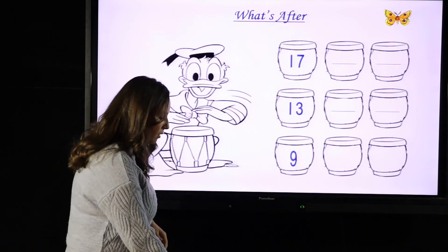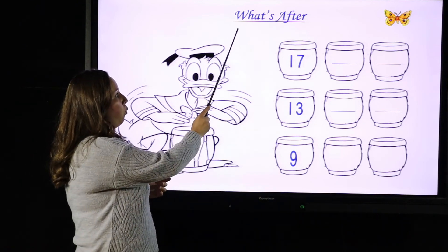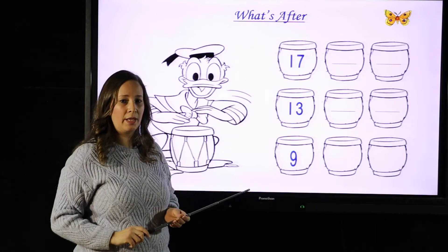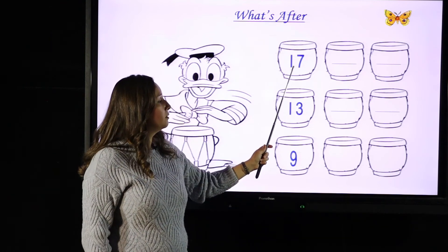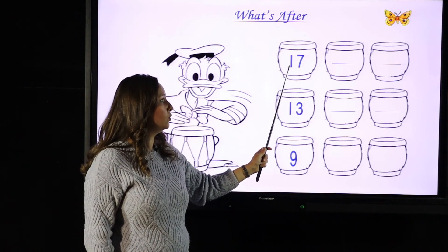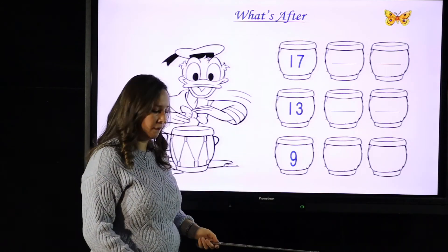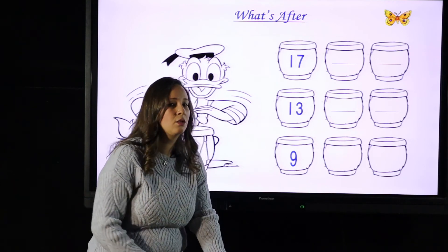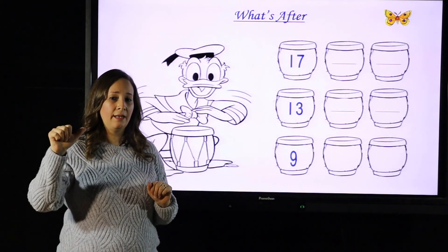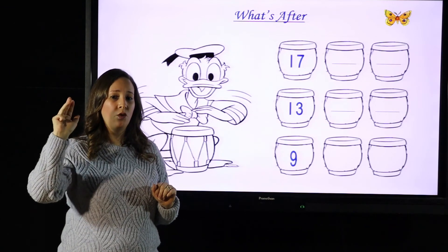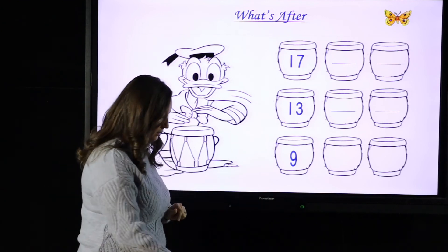Okay, this exercise is very easy — what's after? This is number 17: 1 and 7 is 17. What comes after 17? Let's count. Now we have 10. After 10: 11, 12, 13, 14, 15, 16, 17, 18. So after 17 comes 18.